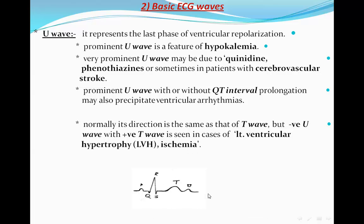In summary, the P wave shouldn't exceed 2.5 small squares in width or height. The PR interval runs from the beginning of the P wave to the beginning of the QRS complex — 3 to 5 small squares, not exceeding one big square. The QRS complex duration shouldn't exceed 2.5 small squares. Then comes the J point, followed by the ST segment which should remain on the baseline within one millimeter. The T wave peaks slightly toward its end, and the U wave is the last phase of ventricular repolarization.